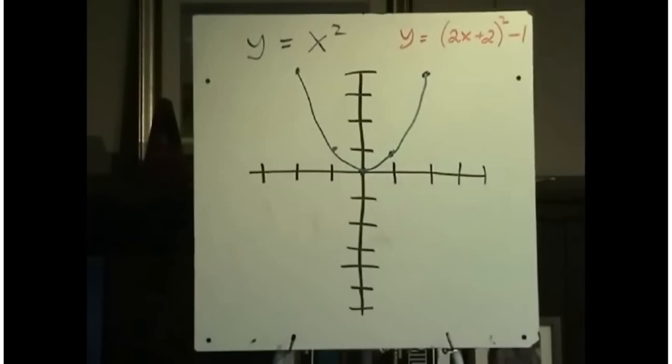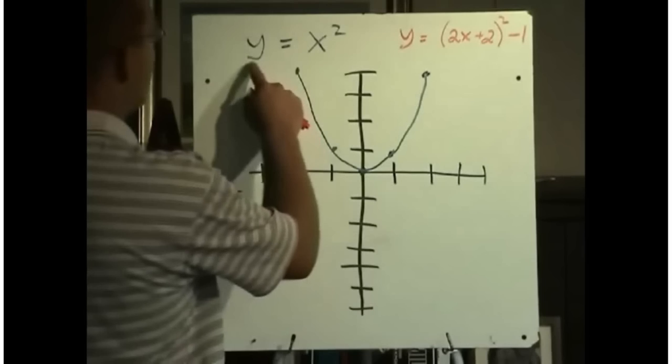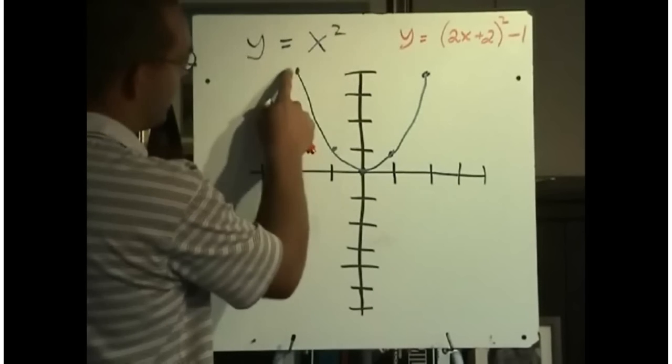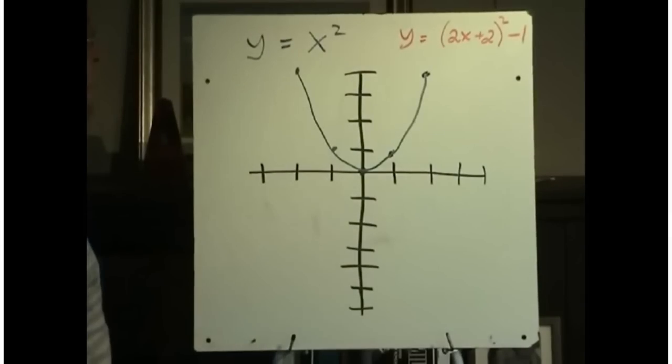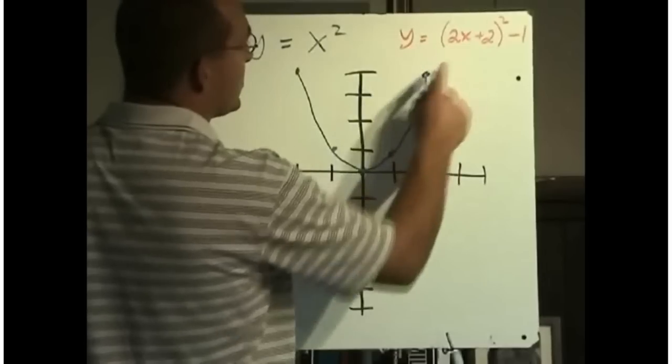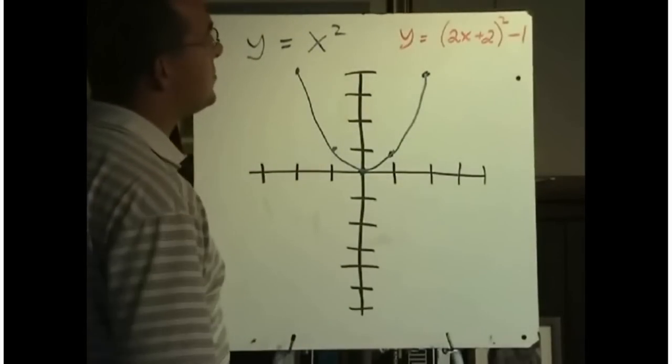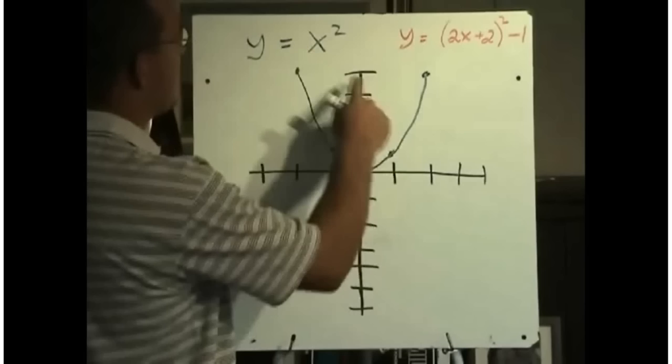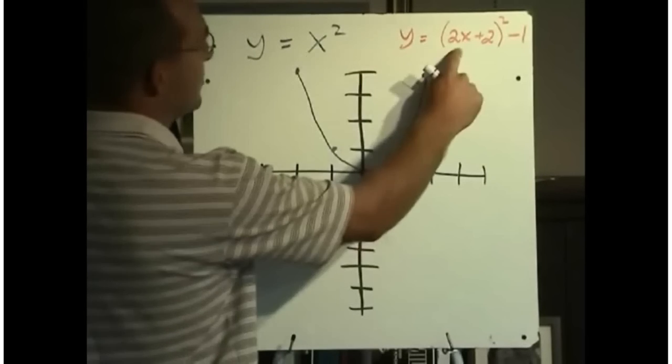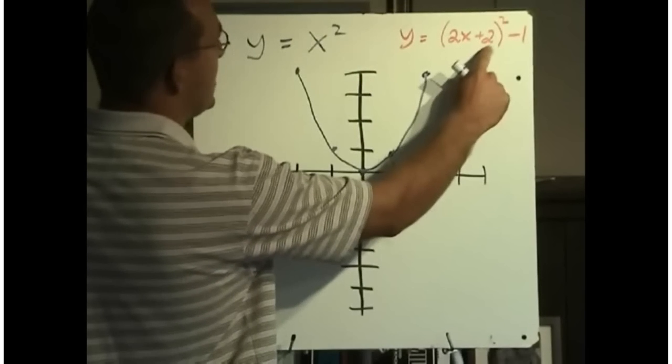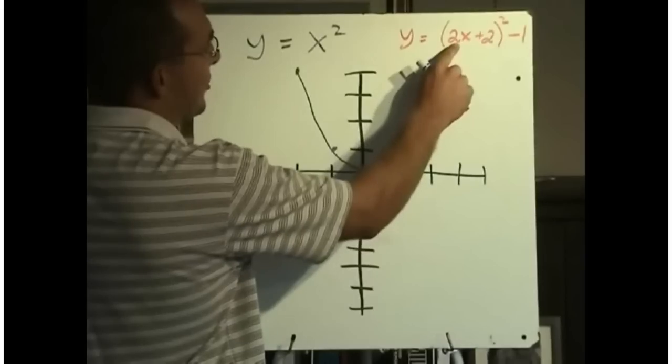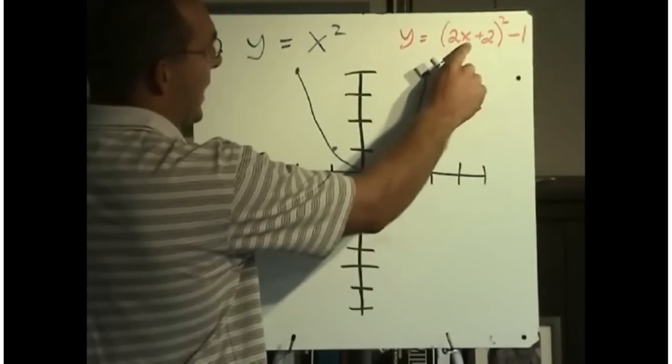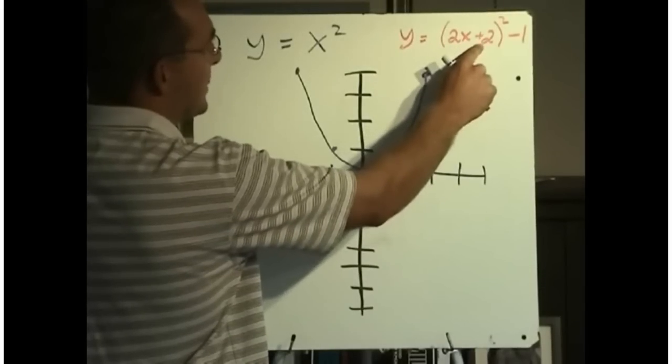Let's look at a specific example where we might be asked to do some graphing of multiple transformations. So I have a graph, y equals x squared. That's the basic one, the parabola. There it is right there, drawn. And now we're asked to graph the new function, y equals bracket 2x plus 2 squared minus 1. So if you look at what's been done here, the x has been replaced with a 2x plus 2, and then we have a minus 1 tapped on here. So initially it might look like we've got a horizontal compression by a factor of a half, and then it looks like we need to move it left 2.